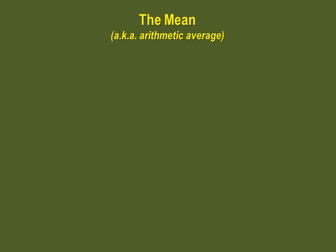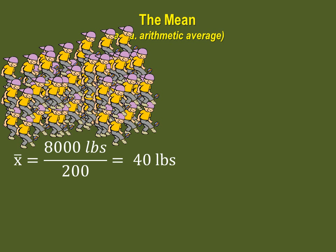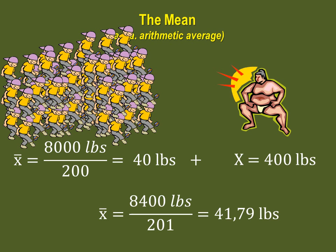On the other hand, if we had a group of 200 children, the sumo's weight would not be as influential. With 200 children, their total weight would be 8,000 pounds, giving a mean of 40 pounds. Adding the sumo wrestler at 400 pounds gives a total of 8,400 pounds divided by 201, so our new mean would be 41.79 pounds. This is only slightly larger — the difference is much smaller when N is large. You can see that means are not always an appropriate approximation of the center of our distribution, so you must use caution when using the mean.